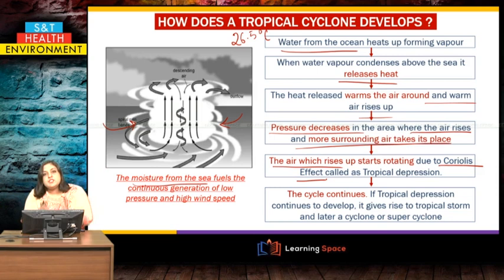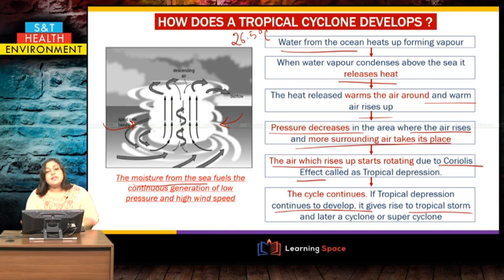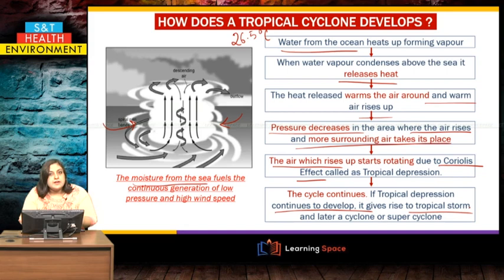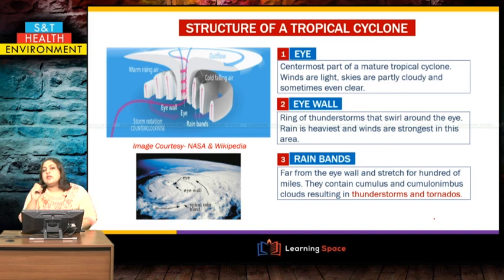Once this loop continues, it is called a tropical depression. If it keeps developing, it gives rise to a tropical storm. Because it is growing over the ocean and continuously getting moisture, it can develop further into a very heavy formation which we call a cyclone, or sometimes a super cyclone.